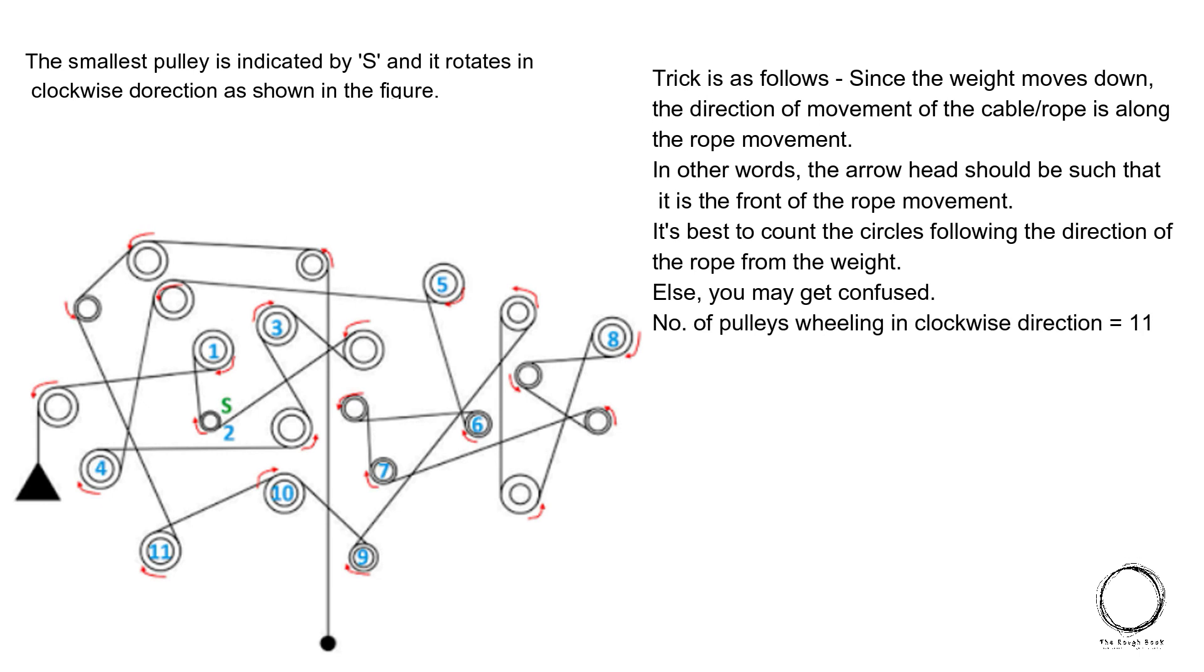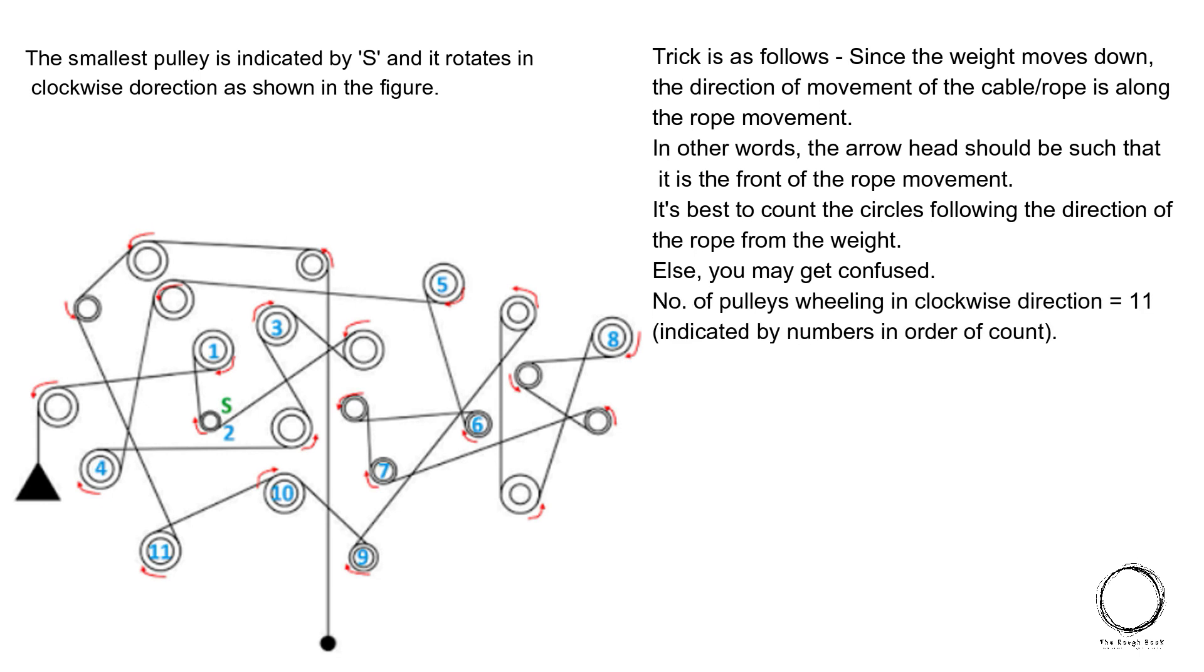So here the trick is, since the weight moves down, the direction of the moment of the cable rope is along the rope moment. In other words, the arrow head should be such that it is in the front of the rope moment. It's best to count the circles following the direction of the rope from the weight. Else you might get confused. Hence, the number of pulleys wheeling in clockwise direction are 11. So the answer is 11.